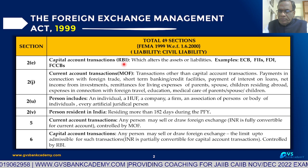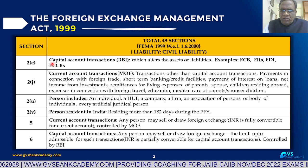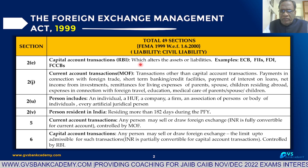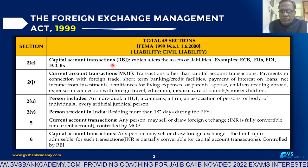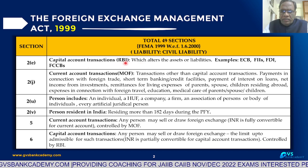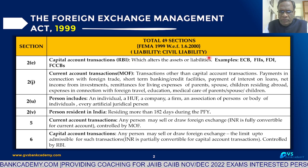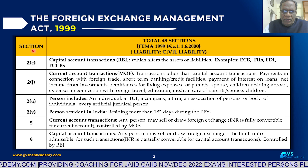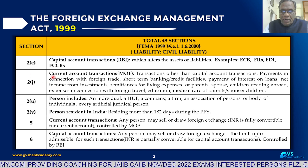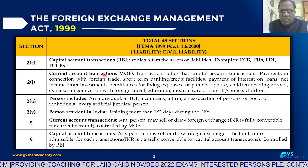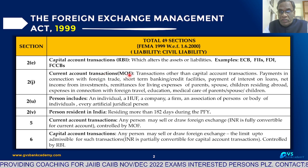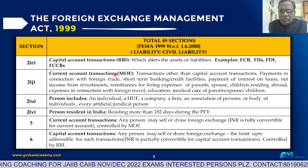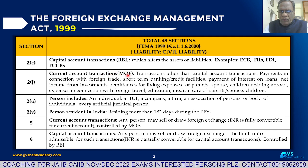For Capital Account Transactions and convertibility, in 1996-97 the Tarapur Committee was initiated and made some recommendations. Section 2J of FEMA Act deals with Current Account Transactions. Current Account Transactions are controlled by the Minister of Finance.